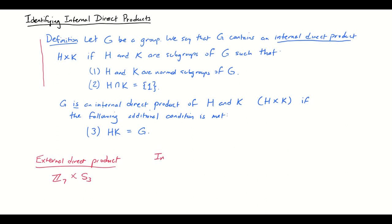That's an external direct product — a direct product that comes from taking groups in the outside world and jamming them together. An internal direct product, as in the example from the last video with the units mod 15, is where we say U15 really was the internal direct product of the subgroup generated by 2 and the subgroup generated by 11. Here we're getting a direct product by taking a group whose structure we're interested in and finding two factors inside of that group and observing that the group is a direct product of those. The terminology external versus internal is not the most important aspect; I just want you to be aware of the distinction.